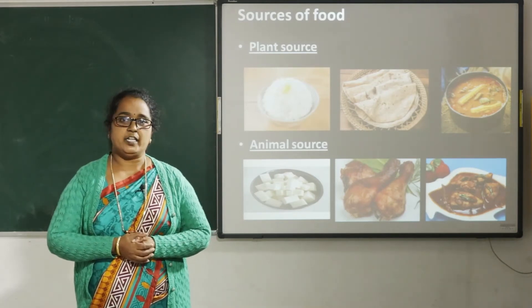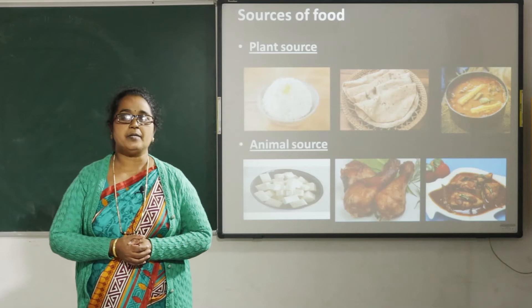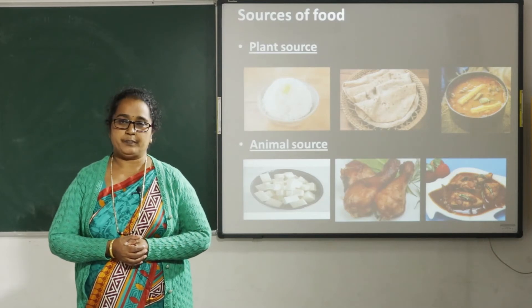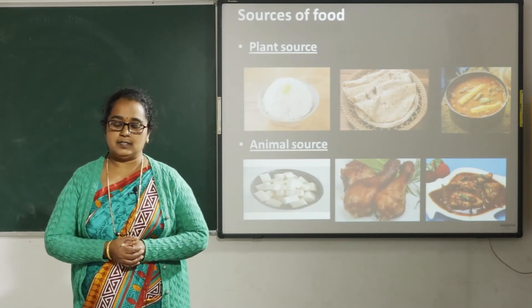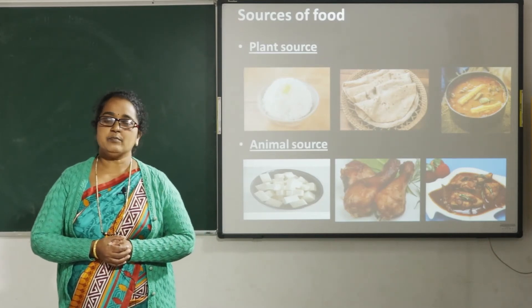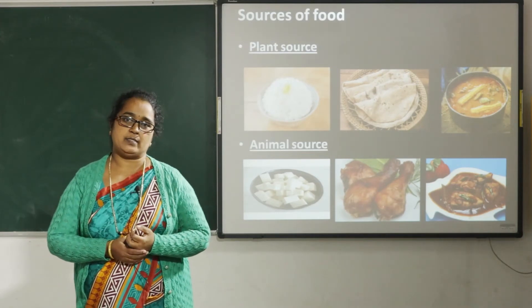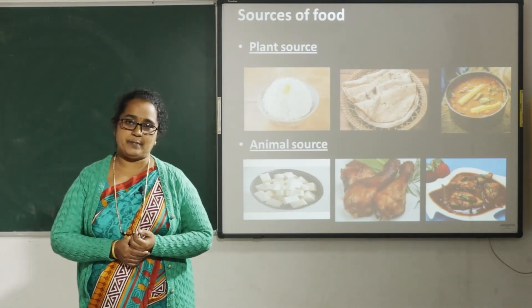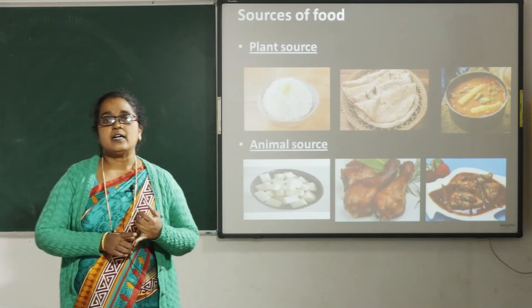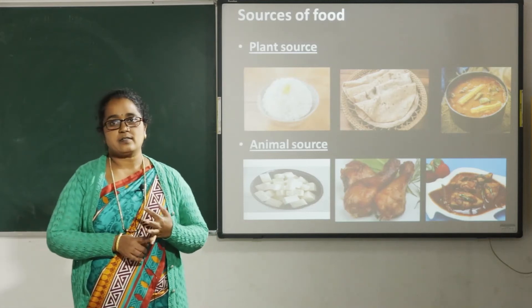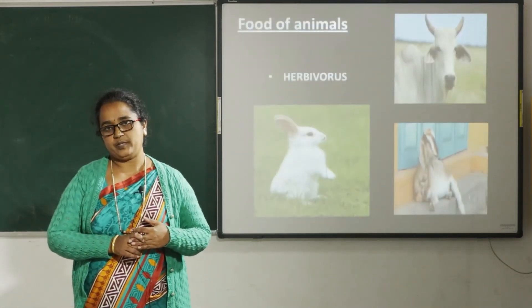Animals also need food to live, grow and be healthy. Let us see the food of animals. Animals are divided into three groups on the basis of their food habits — they are herbivorous, carnivorous, and omnivorous.